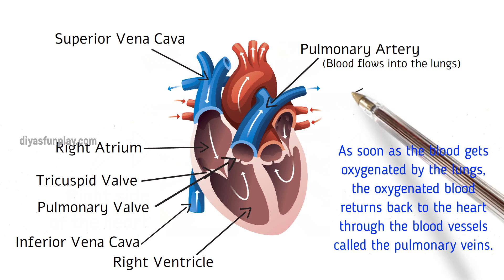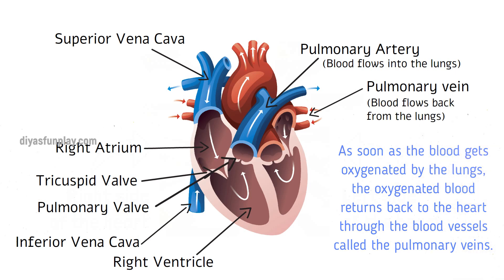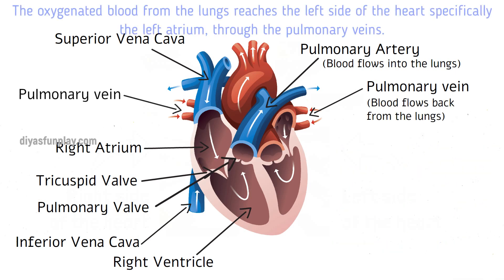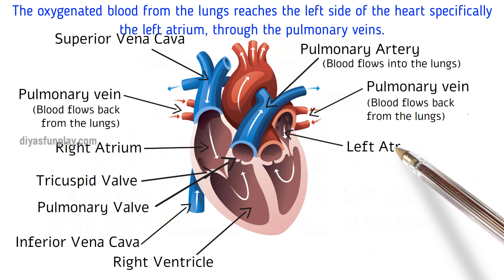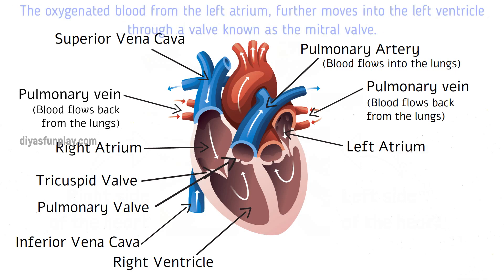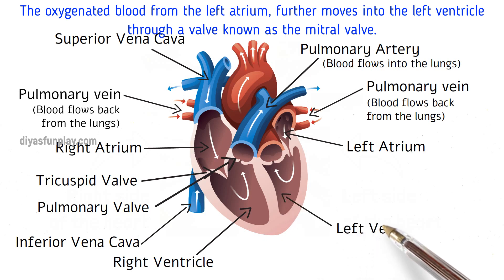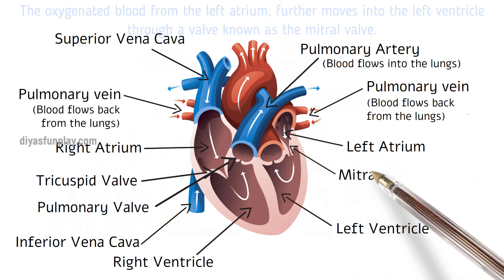As soon as the blood gets oxygenated by the lungs, the oxygenated blood returns back to the heart through blood vessels called the pulmonary veins. The oxygenated blood from the lungs reaches the left side of the heart, specifically the left atrium, through the pulmonary veins. This oxygenated blood then moves from the left atrium into the left ventricle through a valve known as the mitral valve.